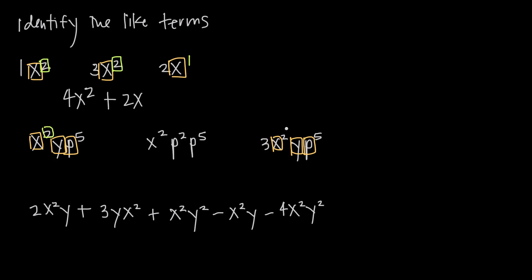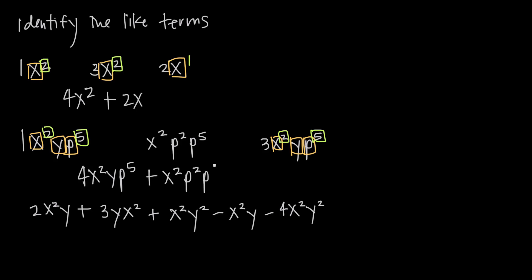Here I have x squared and here I have x squared. I have y to the first and y to the first — just that single y — so that's perfect. And I have p to the fifth and p to the fifth. Because I have the same variables with the same exponents, everything matches and I can add these together. I have 1x squared y p to the fifth and I have three of them, so I get 4x squared y p to the fifth. I can't combine it with the remaining term since there's no y and there's an extra p squared, so I write plus x squared p squared p to the fifth.